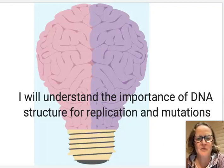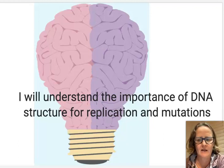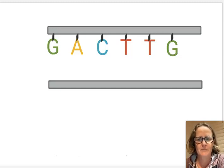Hi, and in this video we're going to look at the importance of DNA structure for replication, which is copying DNA, and for mutations. So what happens when the code in DNA changes? Let's have a look at this strand of DNA. You'll see that we've got a gray bar which represents the sugar phosphate backbone and hanging off that are the different bases.